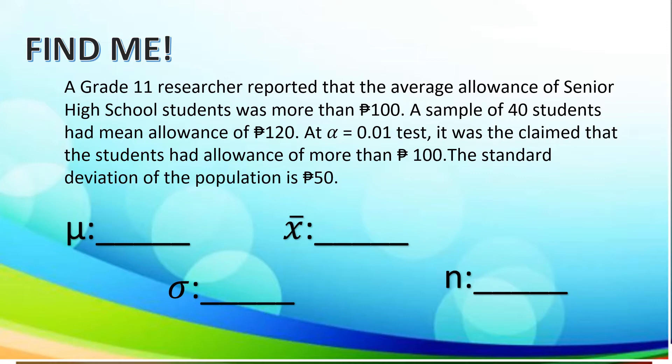A grade 11 researcher reported that the average allowance of senior high school students was more than 100 pesos. A sample of 40 students had a mean allowance of 120 pesos. At alpha, which is 0.01, it was claimed that the students had an allowance of more than 100 pesos. The standard deviation of the population is 50.